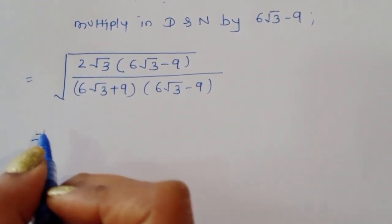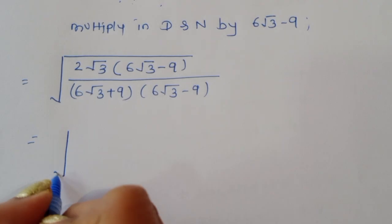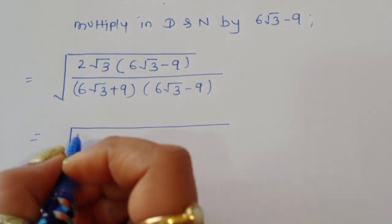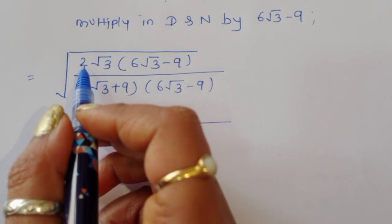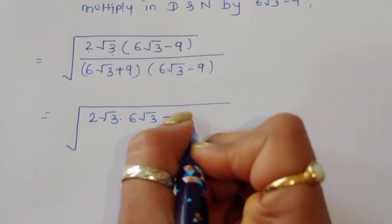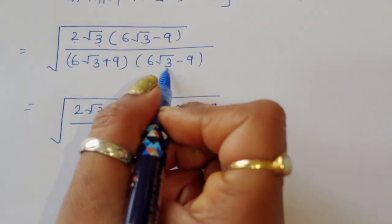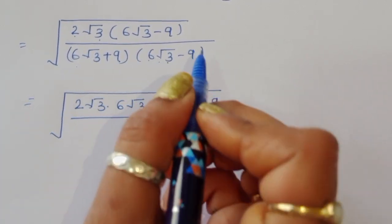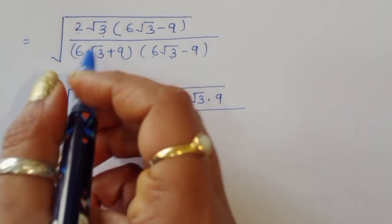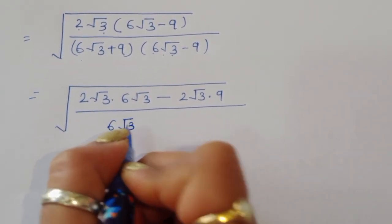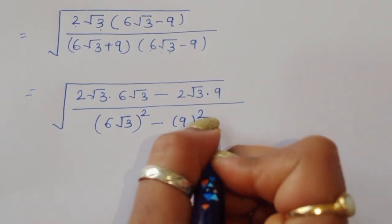Expanding the numerator: 2 square root of 3 times 6 square root of 3 minus 2 square root of 3 times 9. In the denominator, since we have the form (a + b)(a − b), we apply the formula a squared minus b squared, where a is 6 square root of 3 and b is 9.